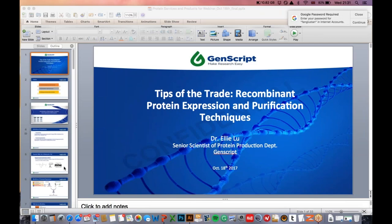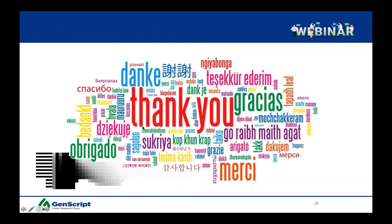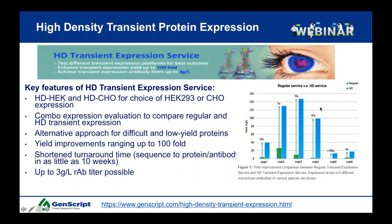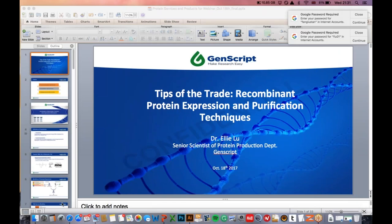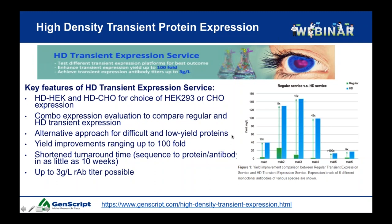The first service Ellie mentioned is our high-density transient protein expression. We have this service available in HEK cells and CHO cells, and you can also do a combination expression evaluation to compare regular versus high-density. You can get yield improvements ranging up to 100-fold. The turnaround time is about 10 weeks, starting from gene sequence all the way to your recombinant protein or antibody. The figure on the right shows different recombinant antibodies and how expression differs between a regular cell line and the high-density cell line.